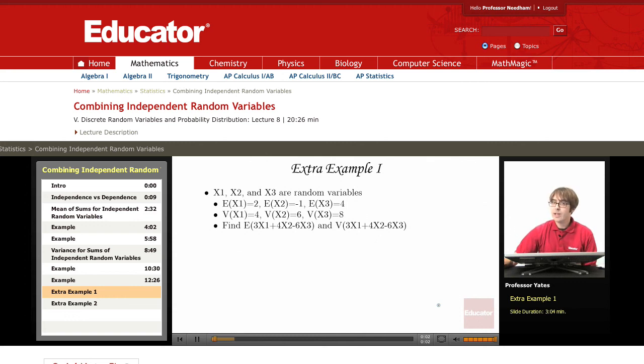Welcome back to Educator.com. We're now going to look at a couple more examples to try and find the mean and variance for a combination of independent random variables.